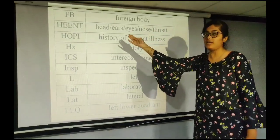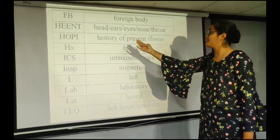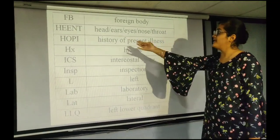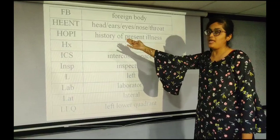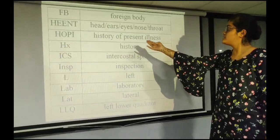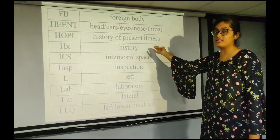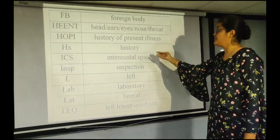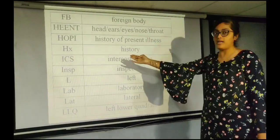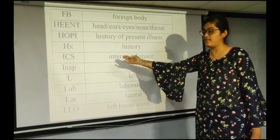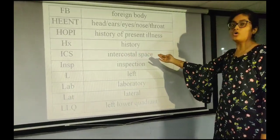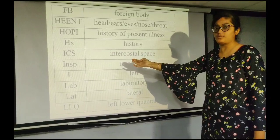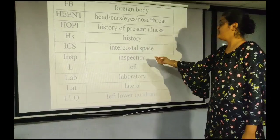Next is HENT — Head, Ears, Eyes, Nose and Throat. Next is HOPI — History of Present Illness. Next is HX — History. Next is ICS — Intercostal Space. Next is INSP — Inspection.